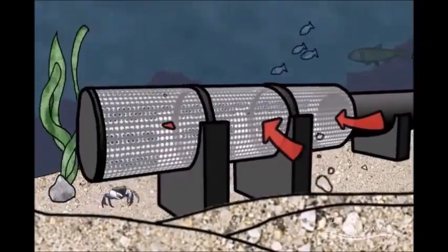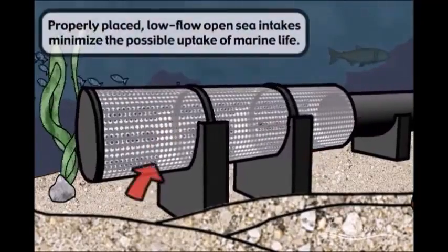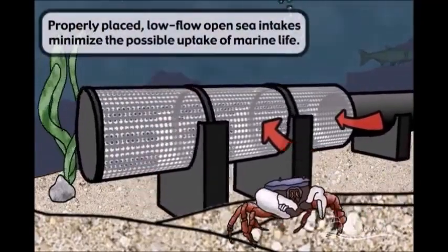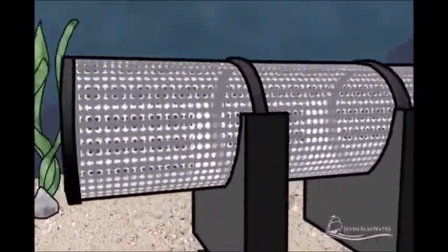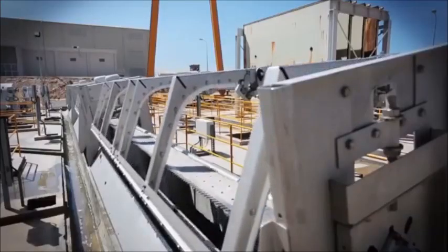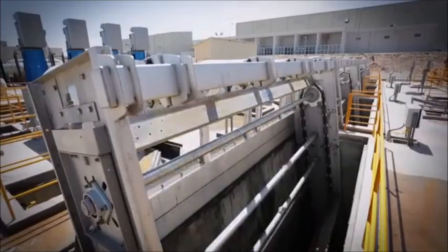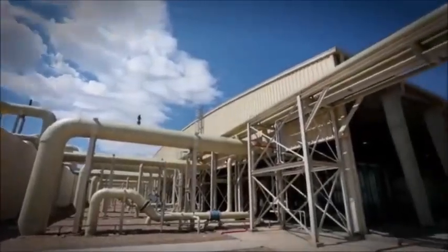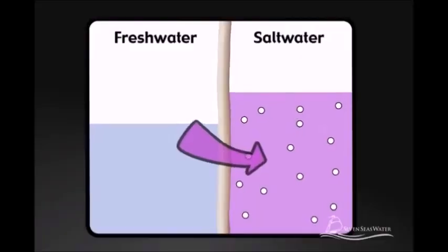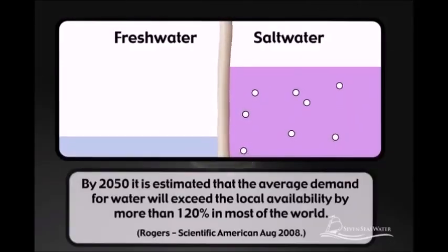The process starts by extracting water from the ocean using wells located on the shoreline or by using an intake structure located in the open ocean. First, debris and large particles are removed by a series of intake filter screens before the seawater is pumped to the ultrafiltration pretreatment system.